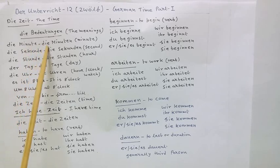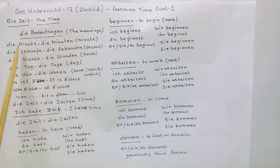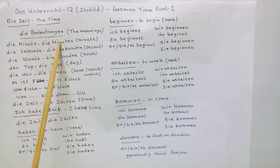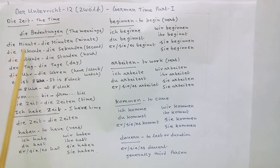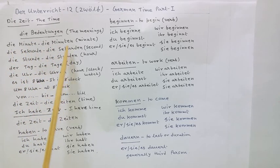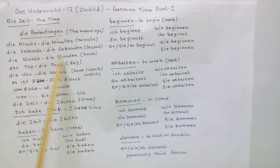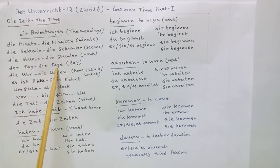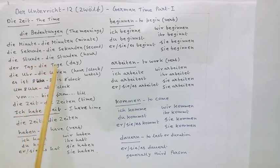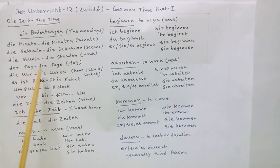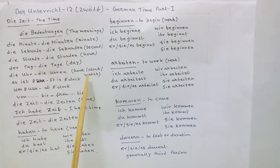Die Minute, die Minuten — the minute, the minutes. Die Sekunde, die Sekunden — the second, the seconds. Die Stunde, die Stunden — the hour, the hours. Der Tag, die Tage — the day, the days. This is singular and plural. Die Uhr, die Uhren — it means hour, clock, or watch.